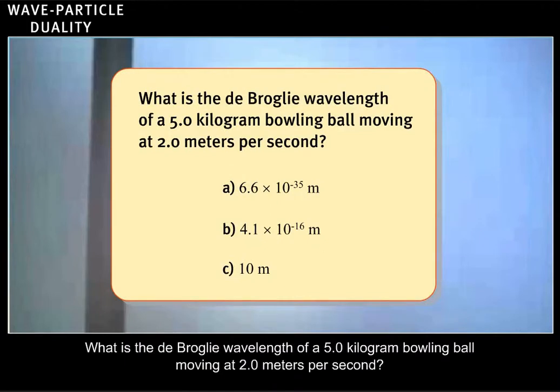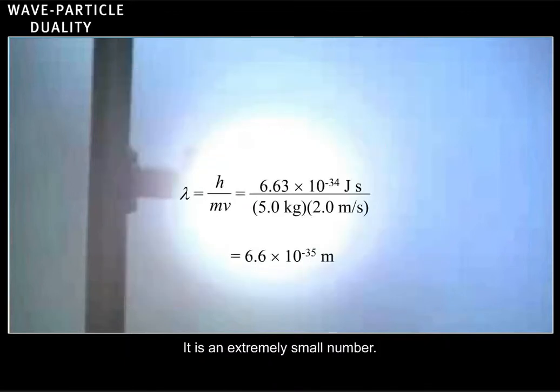What is the de Broglie wavelength of a 5.0 kilogram bowling ball moving at 2.0 meters per second? Correct! It is an extremely small number.